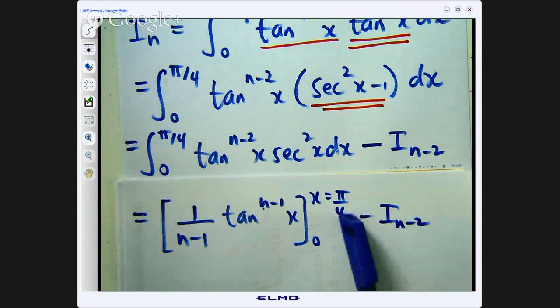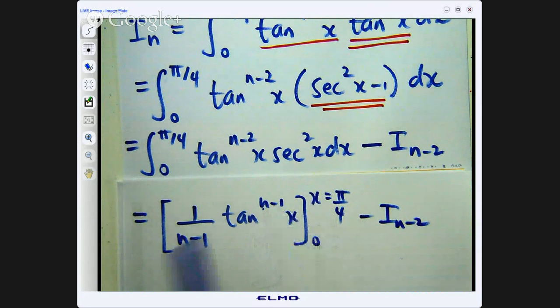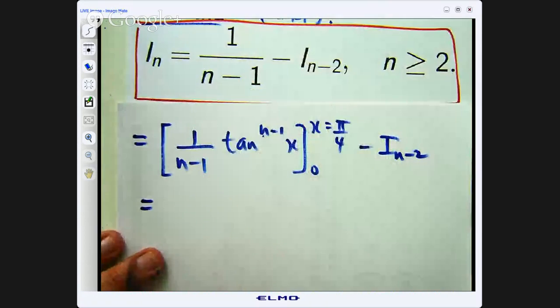When I put in π over 4, I will get 1 to the power of n minus 1 here, and when I put in x equals 0, I will get 0. So I get the thing I am looking for.